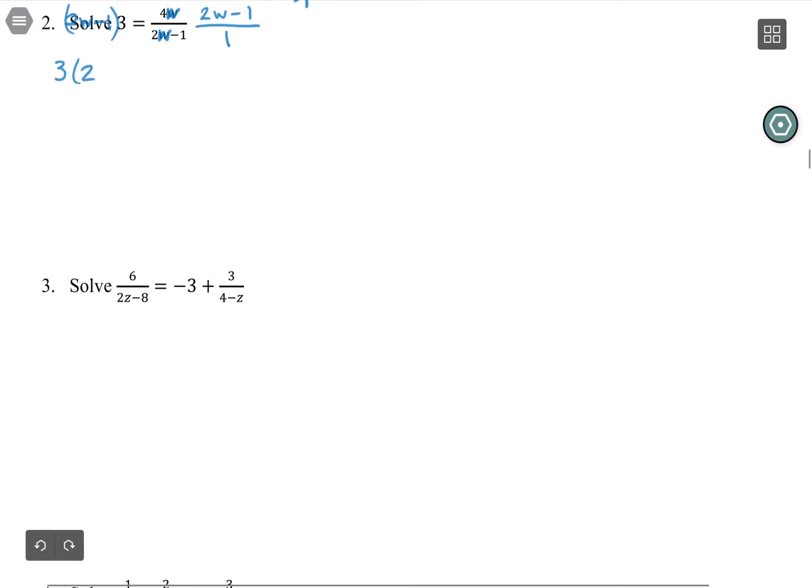So I have a three times 2w minus one. Remember, you can do multiplication whichever order you want. So you can write the three in front or in back. On the other side, I get to cancel the 2w minus one, and I'm just left with 4w. My variable is no longer stuck in fractions, but it is now stuck in parentheses. So I'm going to go ahead and distribute through, still trying to free my variable. 6w minus 3 equals 4w.